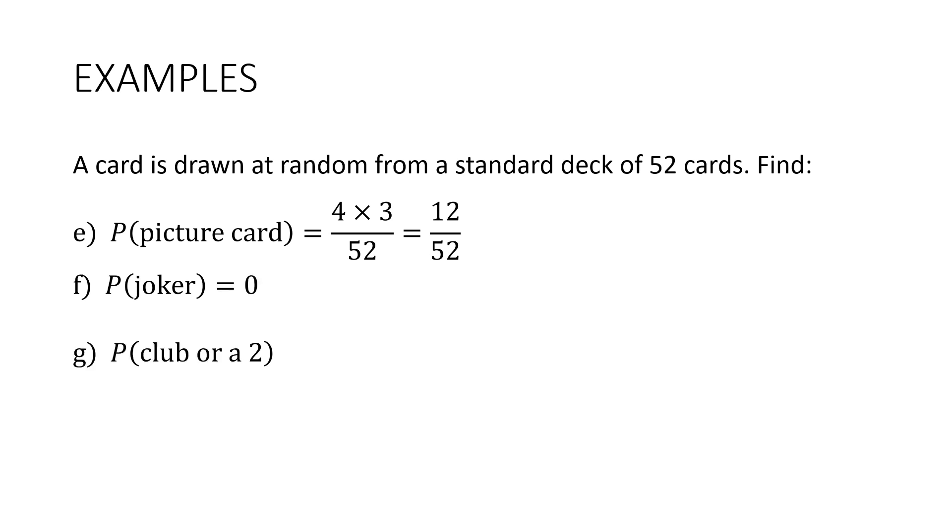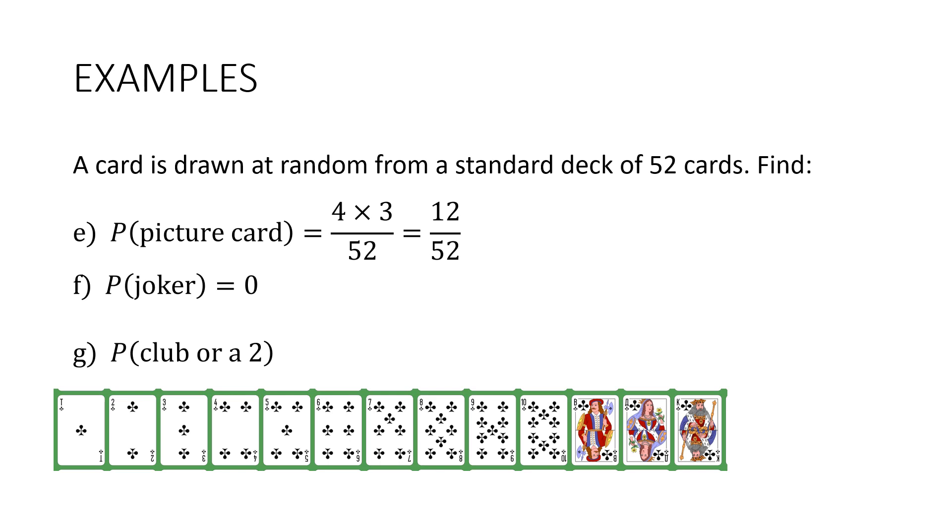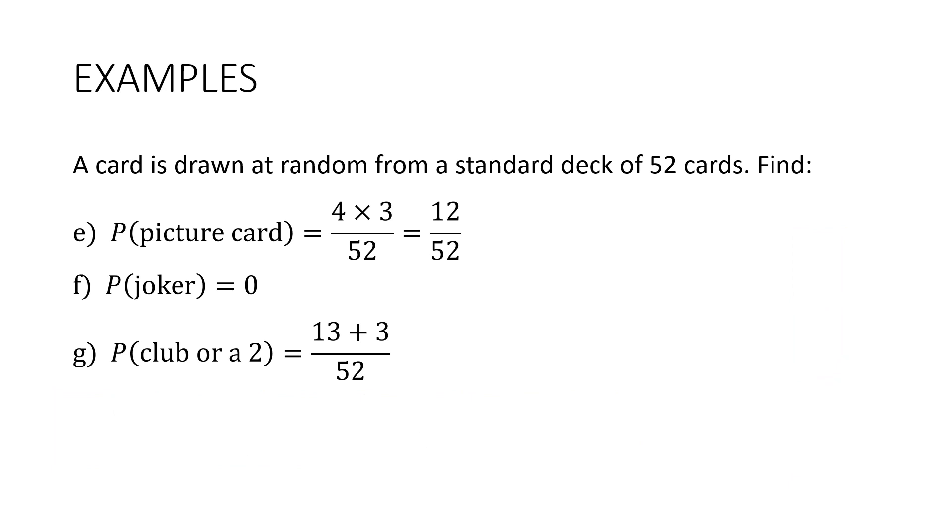And then finally what's the probability that it's a club or a 2? Now this is a bit of a trick question too. Because there are 13 clubs and there are 4 twos. But what's the problem? The 2 of clubs appears in both of the lists. Do you see that? So what we really want to do is the 13 clubs plus the 3 other twos. So that's going to give us 16 on 52.